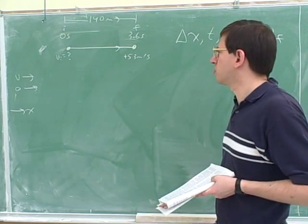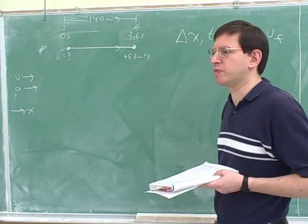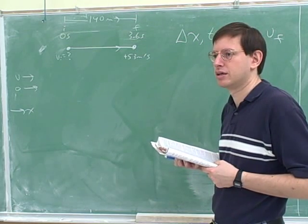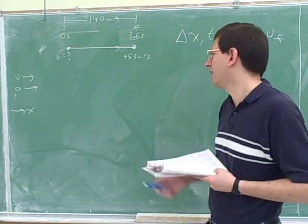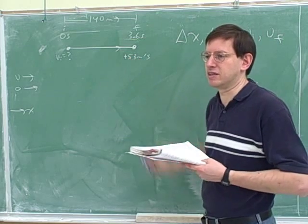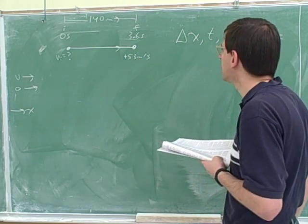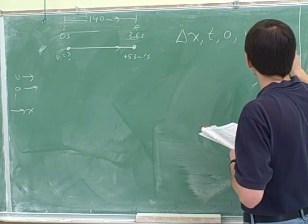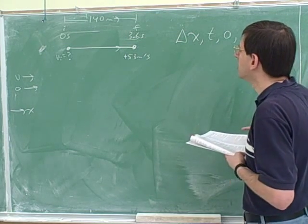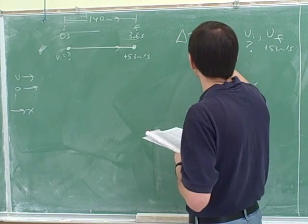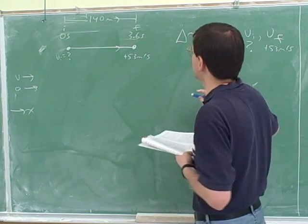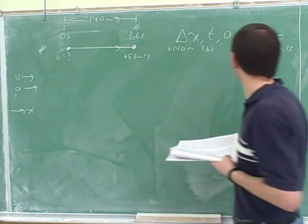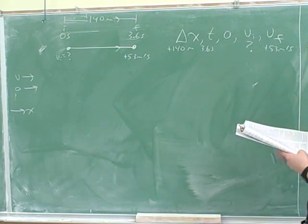We should stop to get a prediction before we do any calculations. What can we predict about the answer here? We can predict that it's going to be smaller than the final — we know the answer should be smaller than 53. So let's get in the habit of trying to predict our answers. What numbers do we know? We know the final velocity, which is positive 53 meters per second. We know the time is 3.6 seconds, and we know the displacement is positive 140 meters. That's three numbers, so now we can pick out an equation.